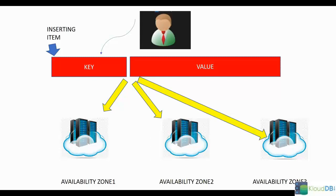So is there a problem with this? There could be, because let's say you are updating a record and somebody else is reading the same record. It takes one second for the update to reach three availability zones. And within that one-second gap, readers of that record may see the older version. So that may be a problem sometimes.